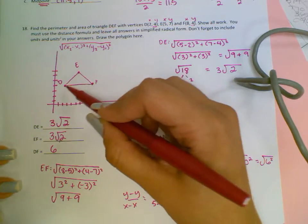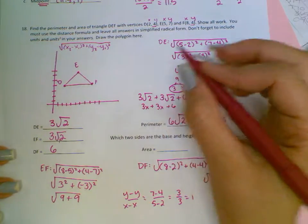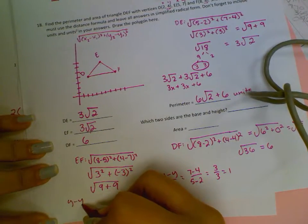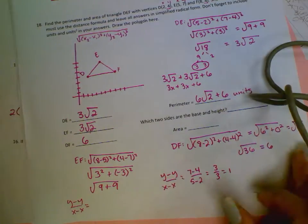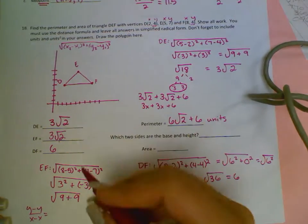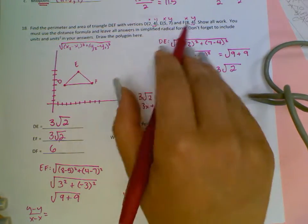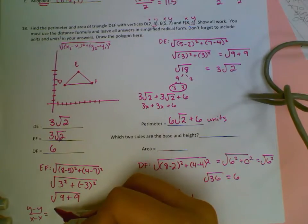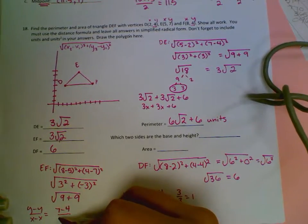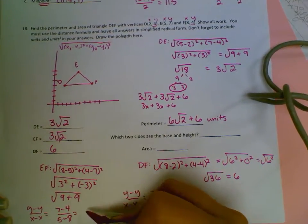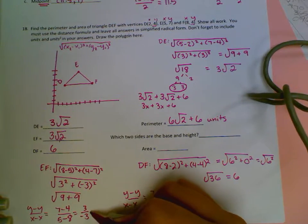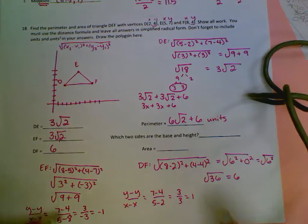I will do y minus y over x minus x. And if I'm doing that for EF, my y minus y, I can do... It doesn't matter which way it goes. I'll do 7 minus 4. But if I started with this 7, I now need to start with this 5. Over 5 minus 8. 7 minus 4 is 3. And 5 minus 8 is negative 3. 3 over negative 3 is negative 1. Because these are opposite reciprocals, the slopes are opposite reciprocals, that means that these sides are perpendicular.